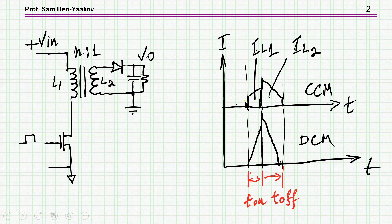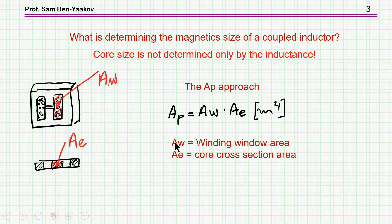Here we see the primary is charging and then it's discharging through the secondary. In the case of DCM there is a charging and discharging, but there is also a period of no energy within the core. The point we are trying to find out is what determines the magnetic size of the coupled inductor — that is, the size of the element.